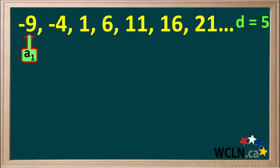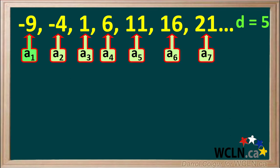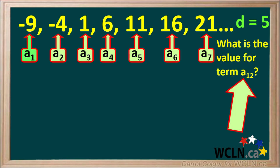We see that the first term a1 is equal to negative 9. Similarly, we can number all the other terms shown here, from a2 to a7. But let's say we wanted to find the value for term a12. We could start at term a7 and keep adding 5 until we get to term a12, but there is an easier way.